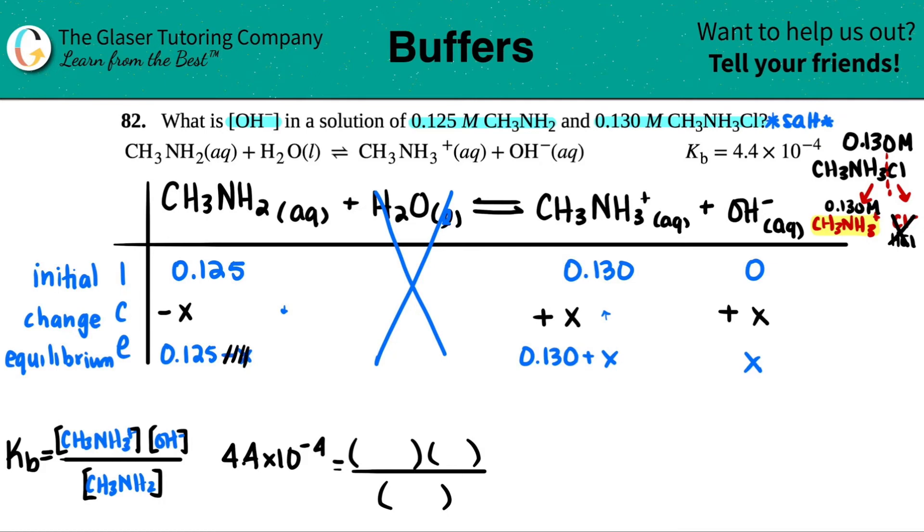So I could get rid of the minus x, and I can get rid of the plus x. I can't get rid of this x, however, because this is the variable. I have to have at least one x in my equilibrium line, or else I don't have any variables to solve for. So now I'm going to pretend that this is going to work. And then we just do a little check at the end to make sure that it does work. So I have 0.130 times x divided by 0.125.